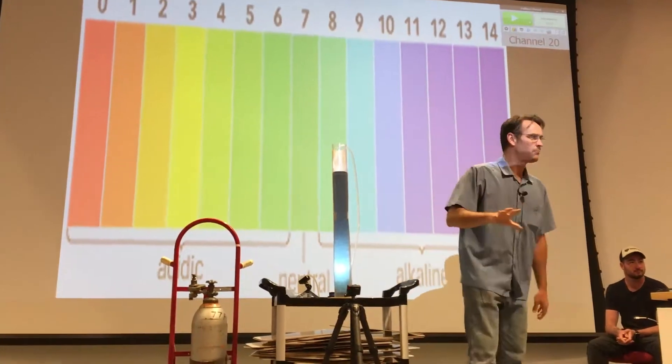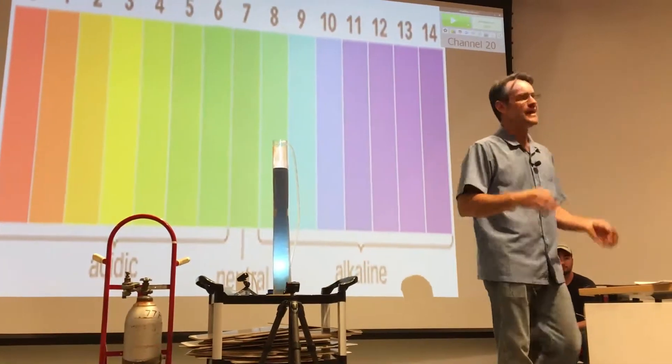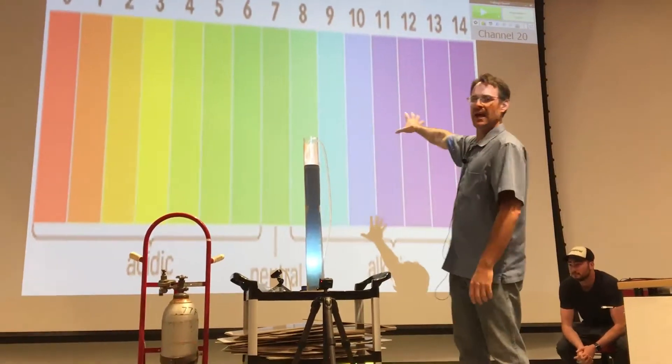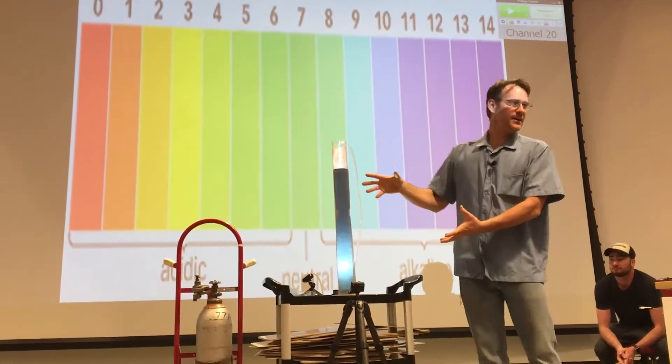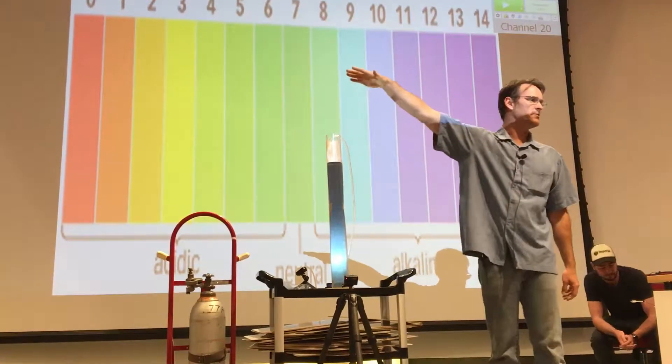And what I've done is I've put in what's called a universal indicator. So if you guys take chemistry, you'll learn that indicators basically change color for a pH. This is a universal indicator, so it actually has two or three of those to give us the entire spectrum of pH.